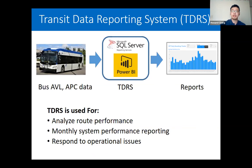Our Transit Data Reporting System, or TDRS, is an online reporting server that produces reports using AVL and APC data uploaded from our conventional fleet. The reporting server is powered by Microsoft Power BI and SQL Server Reporting Services. The system has over 30 million records of data dating back to 2012. TDRS applies algorithms to sanitize data and produce reports relating to service utilization, passenger crowding, and schedule adherence. We use TDRS for analyzing route performance, reporting monthly system performance, and responding to operational issues.